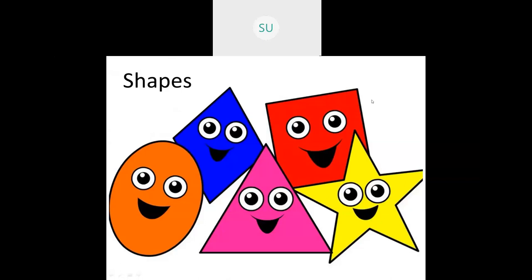So what shapes did you study in first standard? We studied squares, rectangles, triangles, and circles. A rectangle has four sides and all four sides are not of the same length — two sides are short and two sides are long. That is what you've studied about a rectangle.